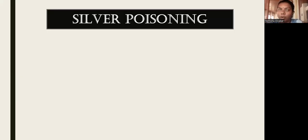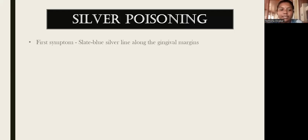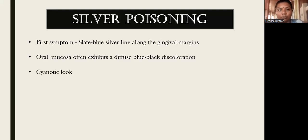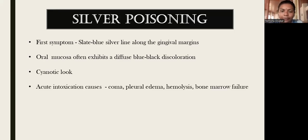The third heavy metal which causes oral pigmentation is silver. In silver poisoning, the first symptom is a slate-blue silver line along the gingival margin. The oral mucosa often exhibits a diffuse bluish-black discoloration, and the patient will have a cyanotic look with bluish tinge all over the oral mucosa and perioral structures. Acute intoxication of silver causes coma, pulmonary edema, hemolysis, and bone marrow failure.